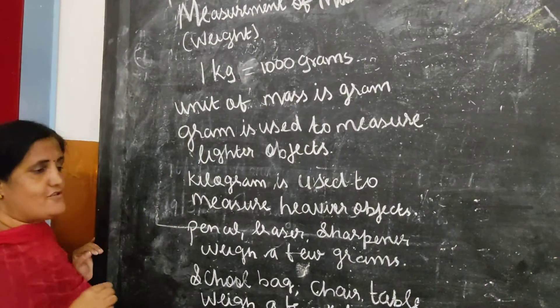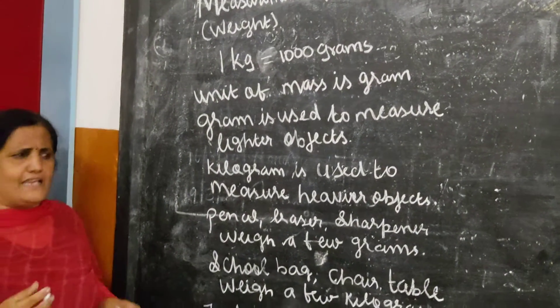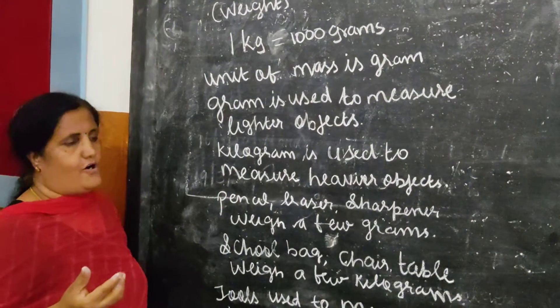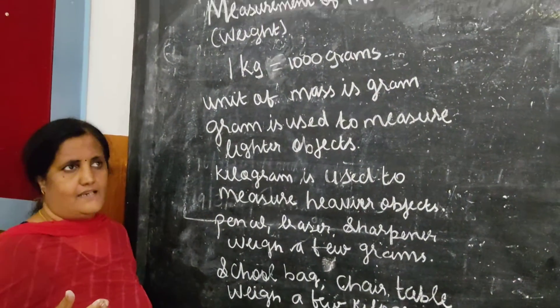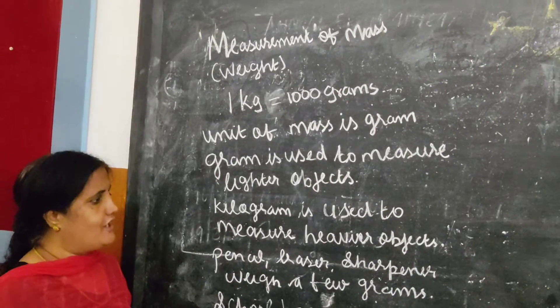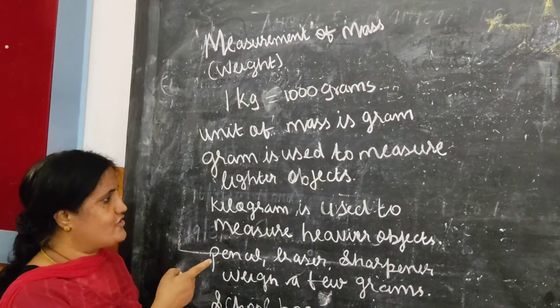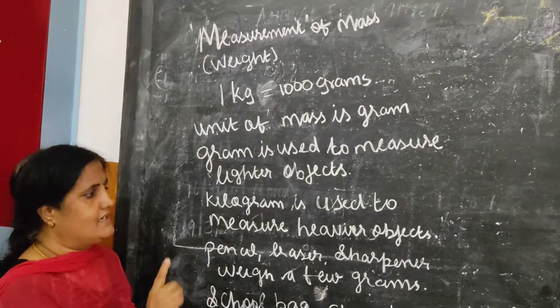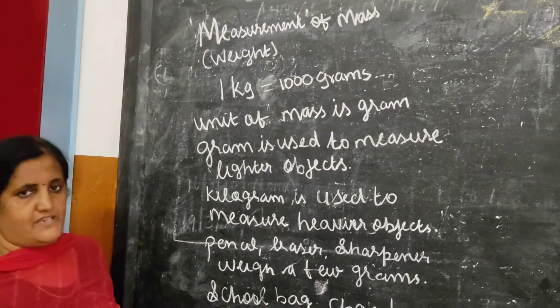Gram is used to measure light objects. Kilogram is used to measure heavy objects.